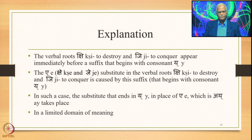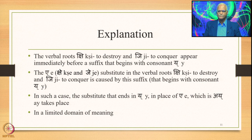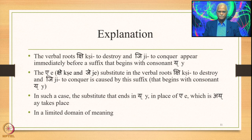The explanation is this: the verbal roots Kshi (to destroy/slay) and Ji (to conquer) appear immediately before a suffix that begins with consonant Y. The A substitute in these verbal roots is caused by this suffix beginning with Y. In such a case, the substitute that ends in Y — Ay — takes place in place of A. This applies in a limited domain of meaning: Kshayyajayav Shakyaarthe, in the sense of Shakya.